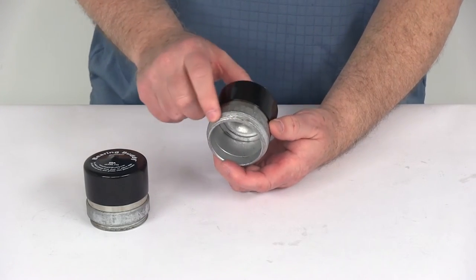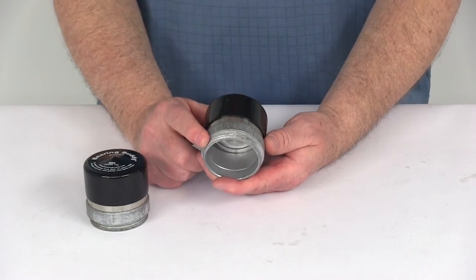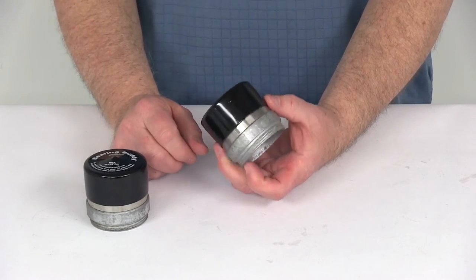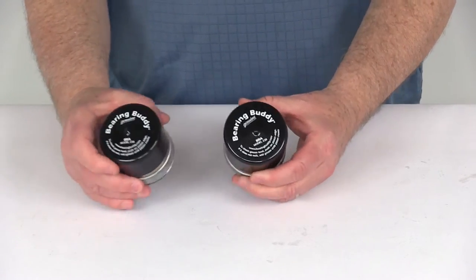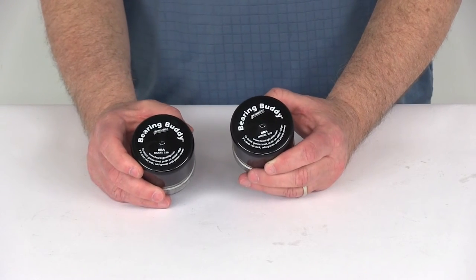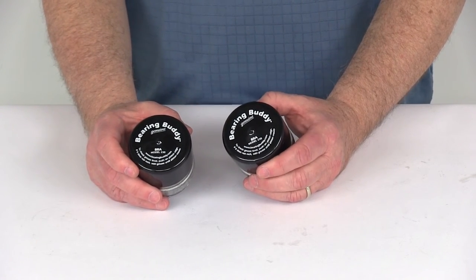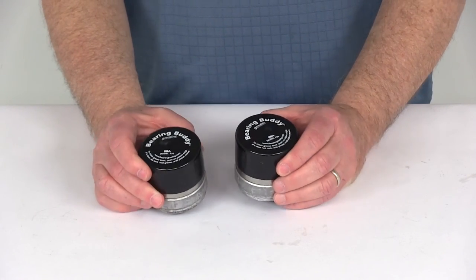Now one last thing on the threaded ones: bearing buddy does recommend to use a Permatex or a greaseproof gasket cement when installing these. But that should do it for the review of the stainless steel bearing buddy bearing protectors for 2.441 threaded hub bores, and this is for a quantity of two.